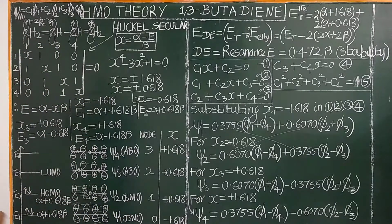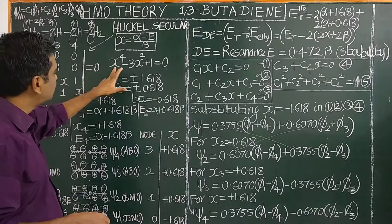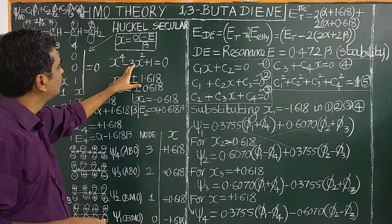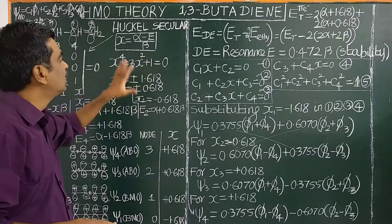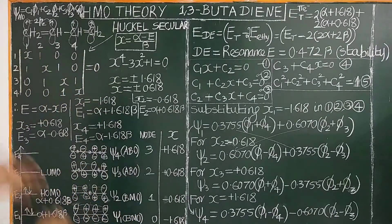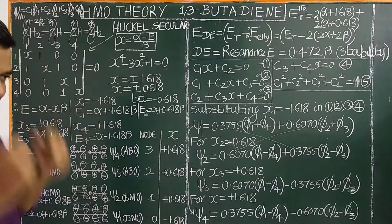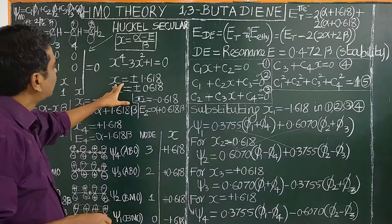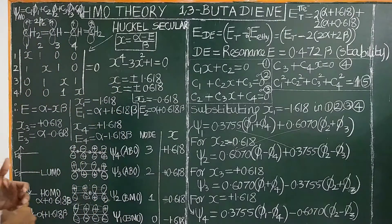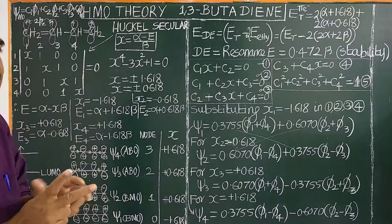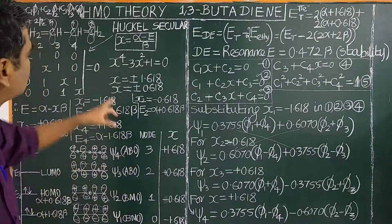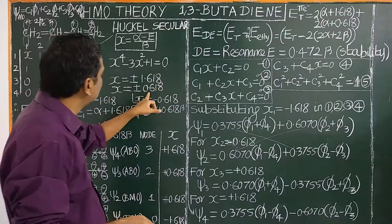On factorizing this secular determinant, the equation x⁴ − 3x² + 1 = 0 is obtained. Since it is a 4th-degree equation, there are 4 solutions. I have given the full mathematical procedure for solving this at the end. Solving this gives: x = +1.618, x = −1.618, x = +0.618, and x = −0.618.